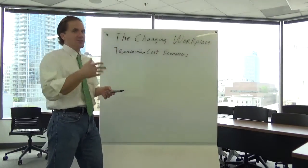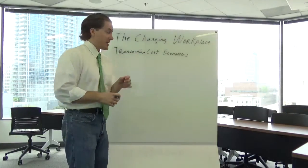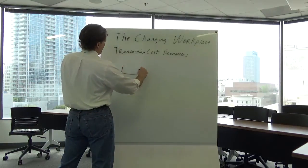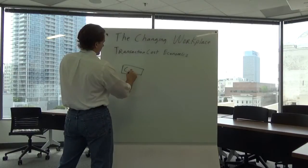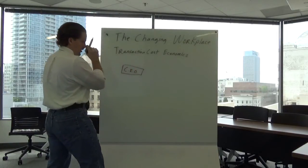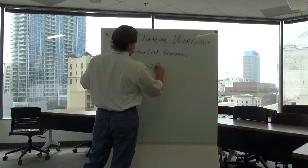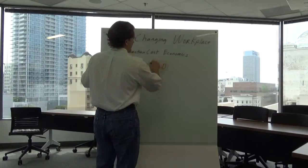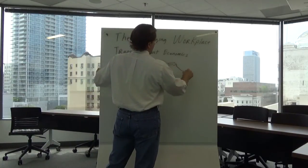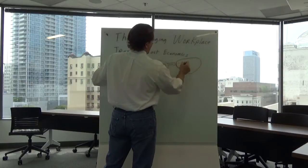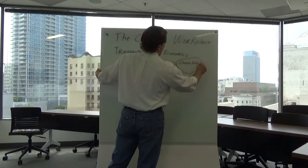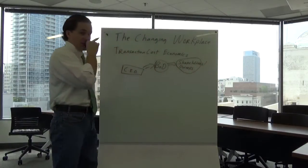We'll use a fictionalized firm with a matrix-style organization structure — I'll also refer to this in our corporate governance video. At the top you've got your CEO, and you've got your board of directors, or BOD. The board of directors represents the interests of shareholders, or owners, depending on how you wish to pitch it.